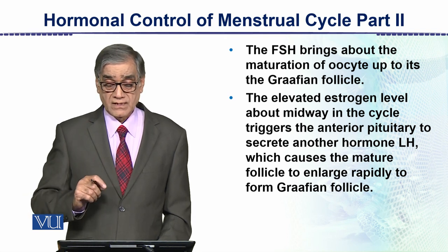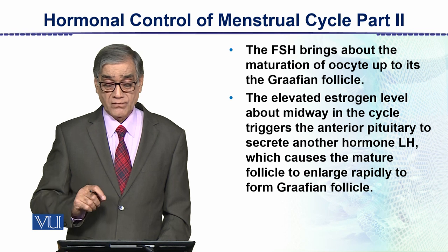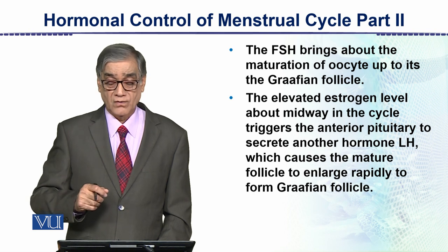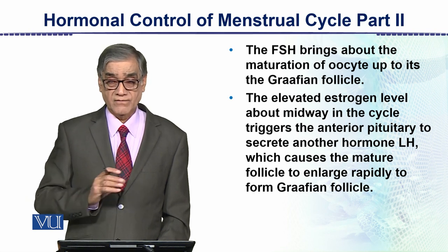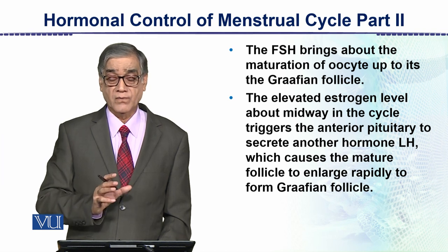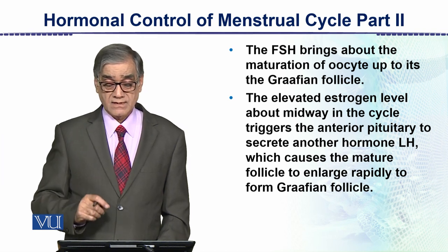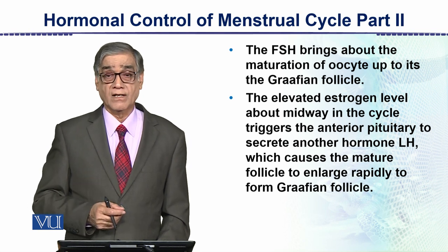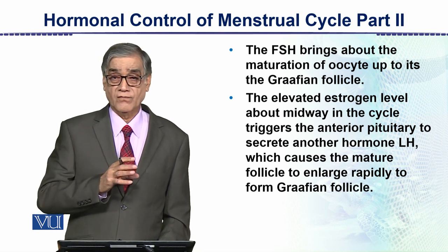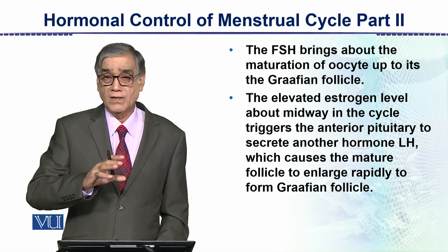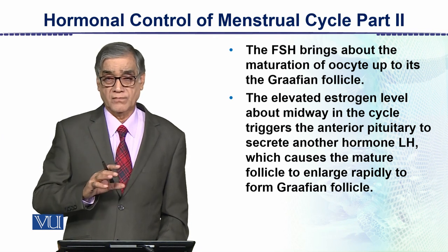The elevated estrogen level about midway of the cycle triggers the anterior pituitary to secrete another hormone, which is LH. So after FSH, LH then starts at the midway of the cycle, which causes the mature follicle to enlarge rapidly to form the Graafian follicle.